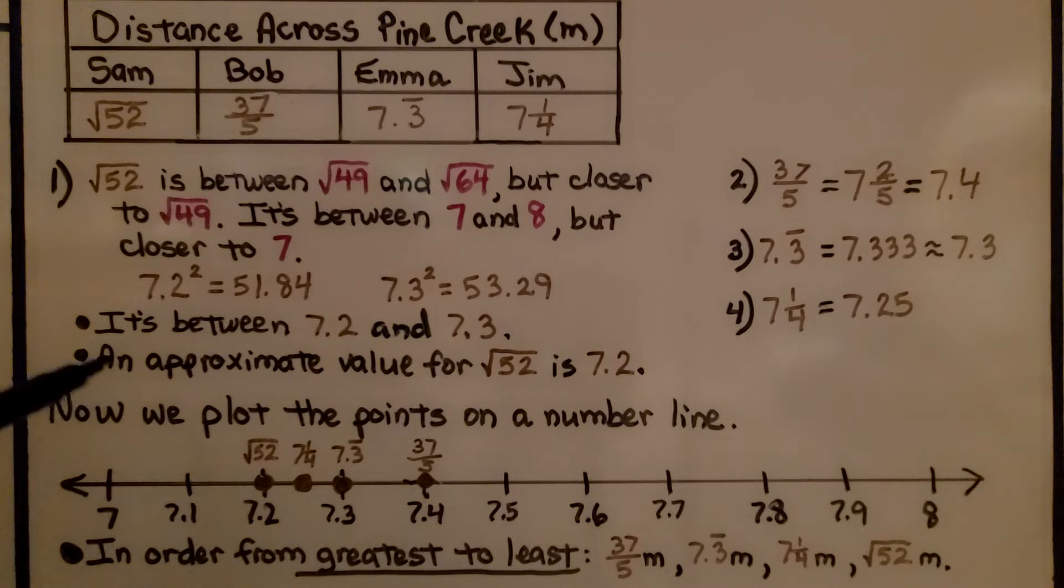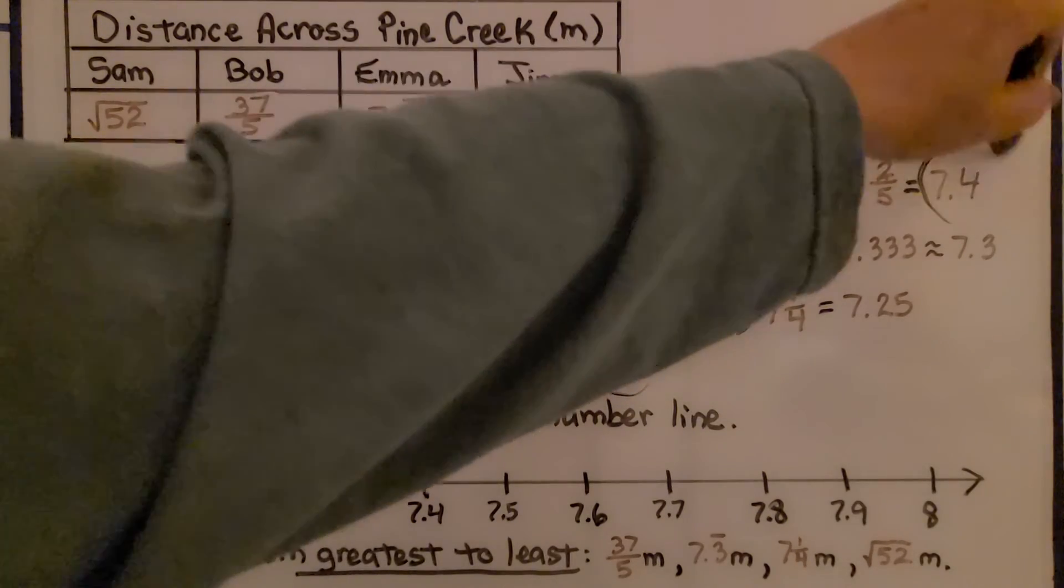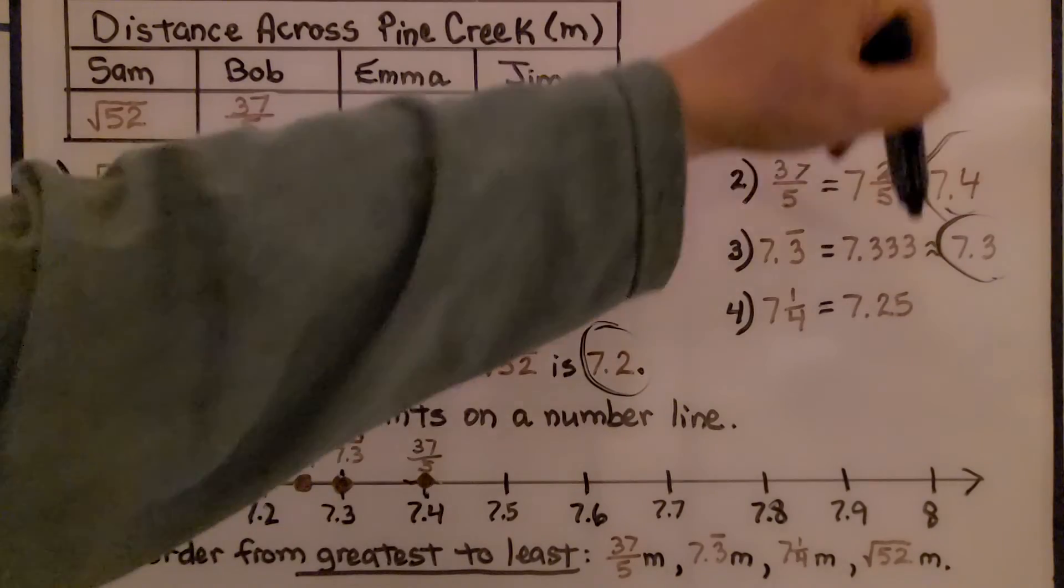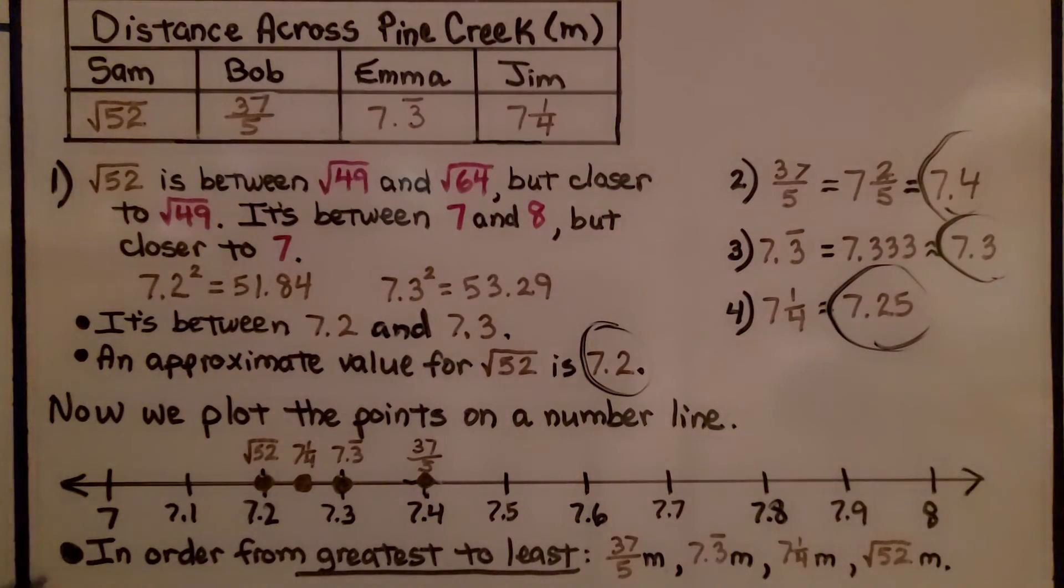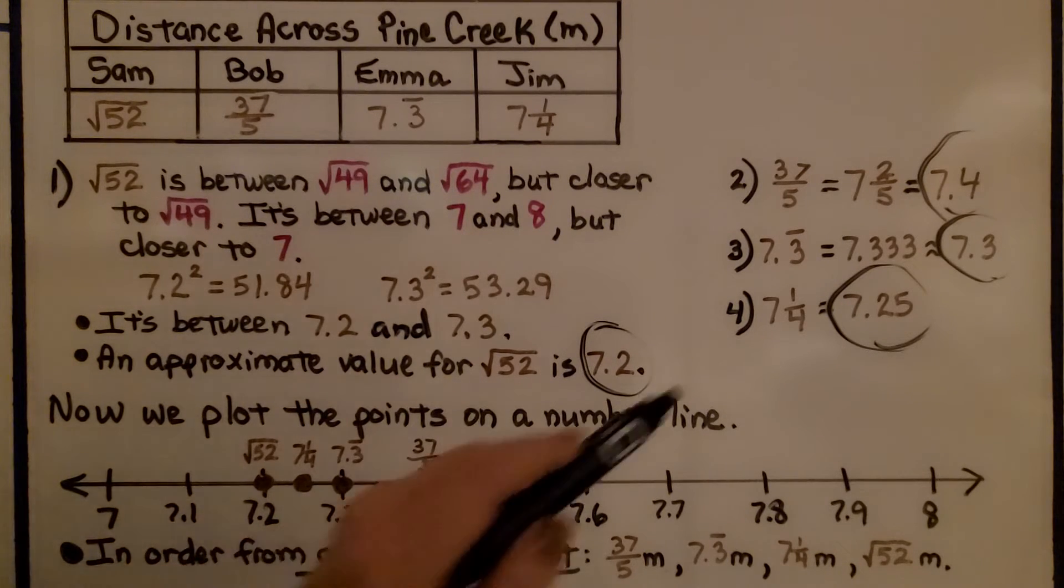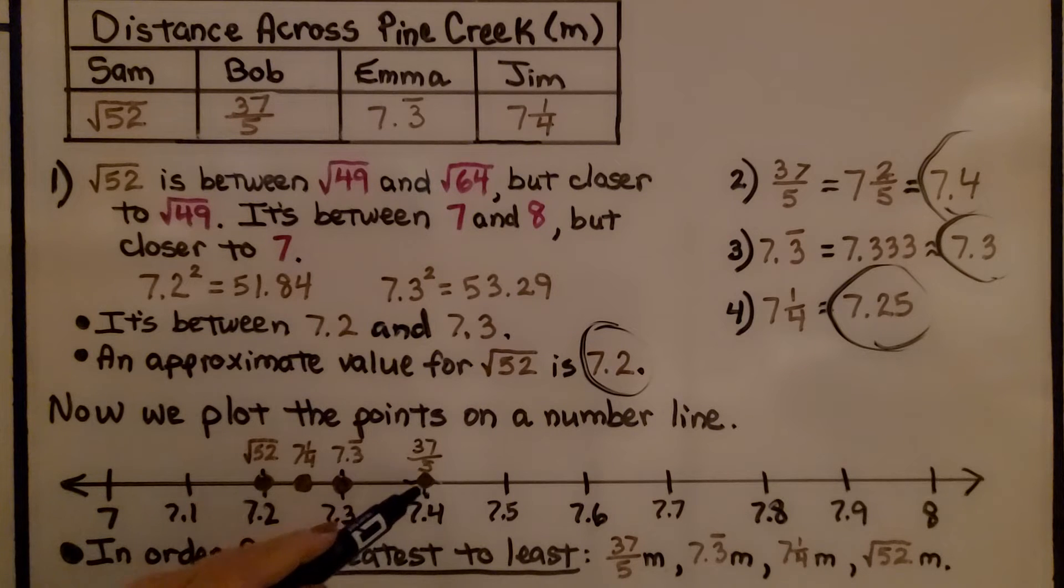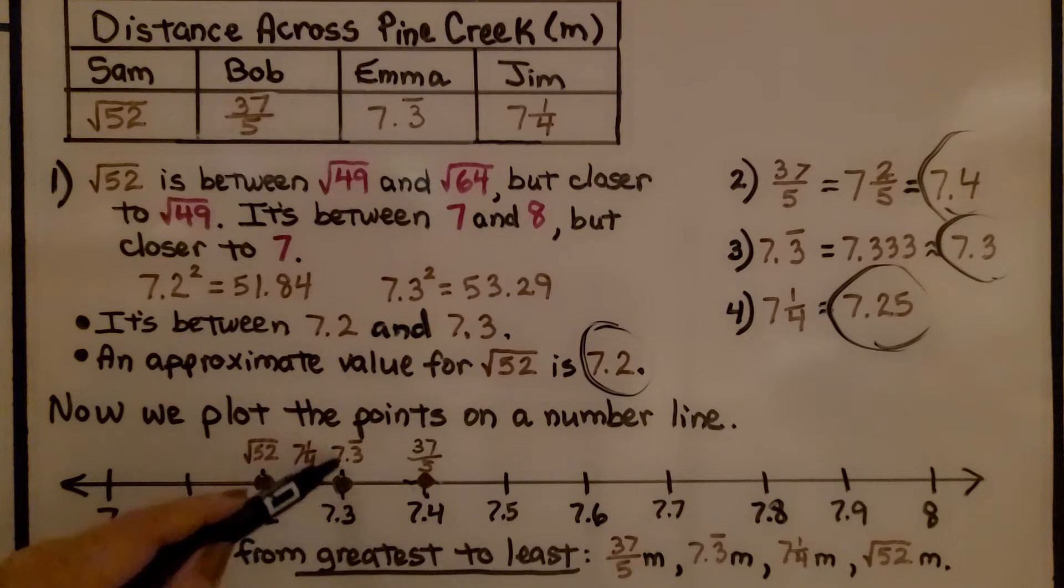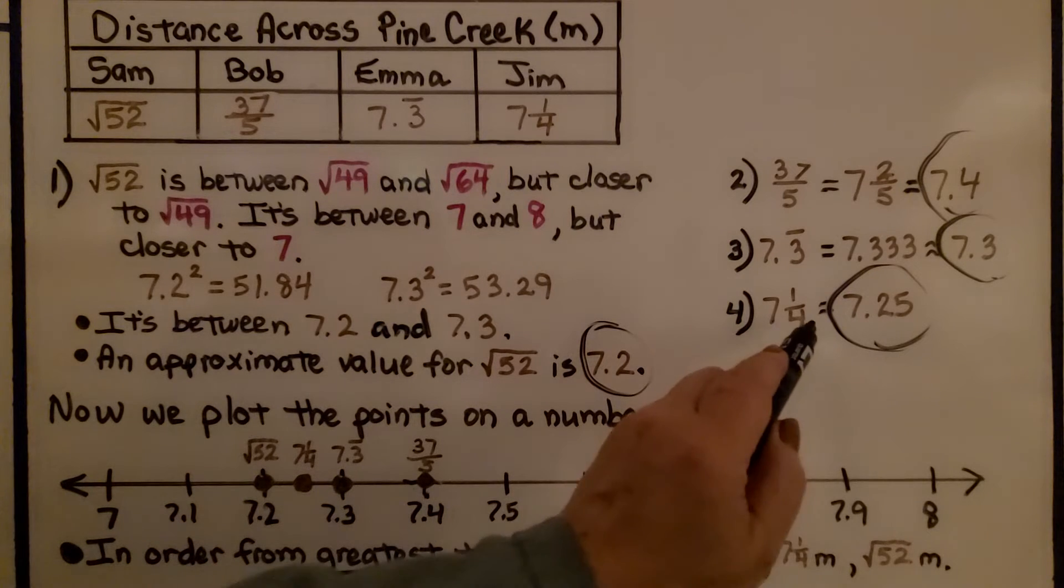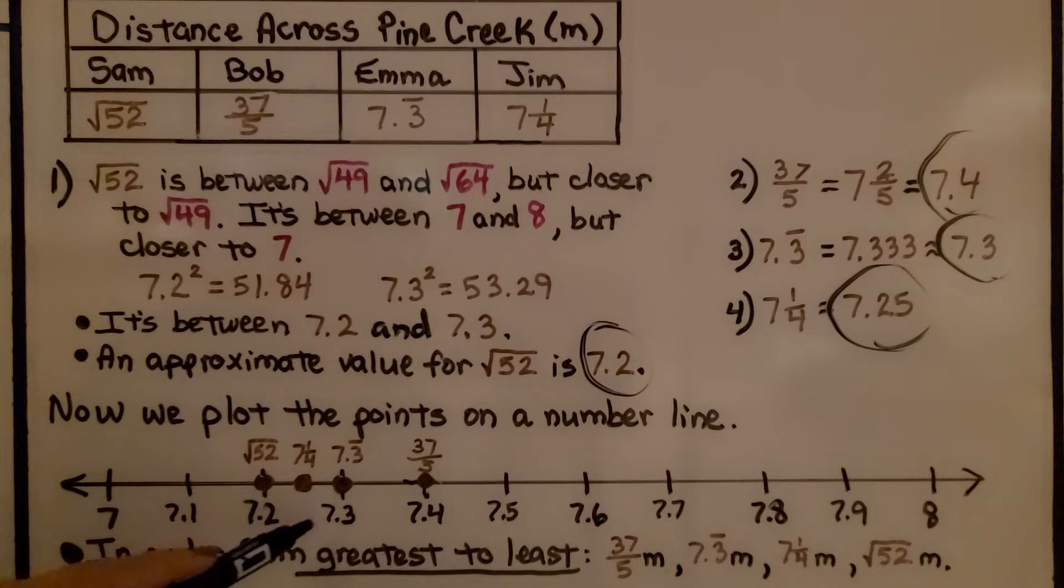Now we know that the square root of 52 is about 7.2, and we've got 7.4, 7.3, and 7.25. We can plot them on the number line as points. Here's 7.2, that would be the square root of 52. We have 37 fifths is 7.4, that's over here. We've got 7.3, that would be about right here. And 7 and 1 fourth would be right here, in between 7.2 and 7.3.